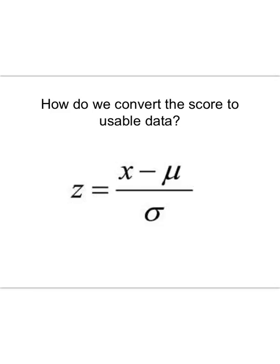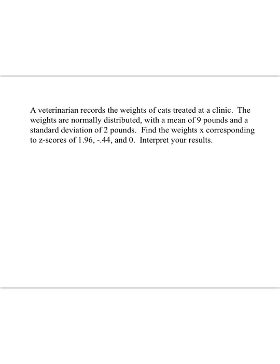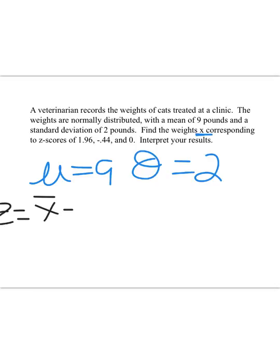How do we convert the score to usable data? Remember this formula. Sometimes we have to find the z-score given information or find the information given the z-score. A veterinarian records the weights of cats treated at a clinic. The weights are normally distributed with a mean of 9 pounds, so we've got μ equals 9, and a standard deviation of 2. Find the weight of the cat with the corresponding z-scores. So now they're giving me the z-score. My formula is going to be z equals x minus μ over the standard deviation. So I have everything except for x because I don't know what the cat weighs. I'm just going to go the other way.